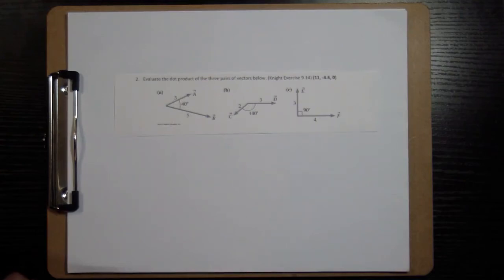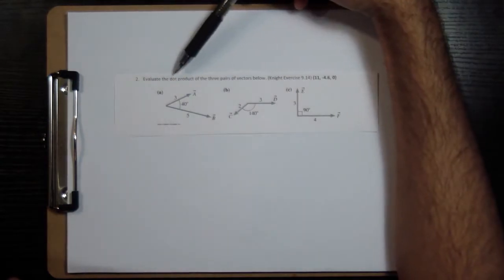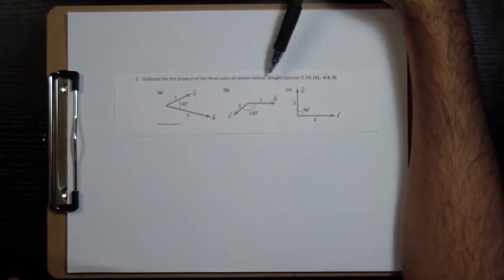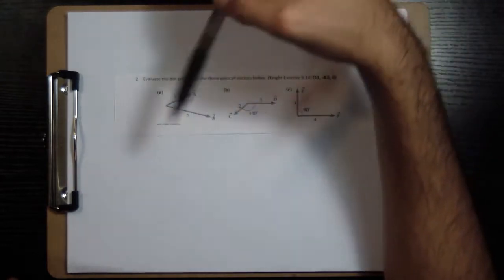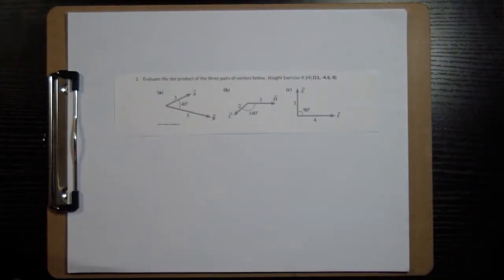Okay, so let's do problem number two. It says, evaluate the dot product of the three pairs of vectors below. They give you three problems, and we have to find the dot product between A and B, C and D, and E and F.